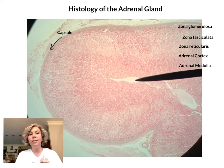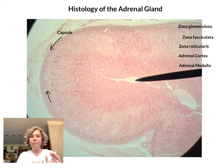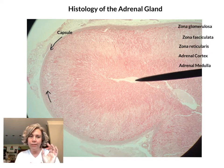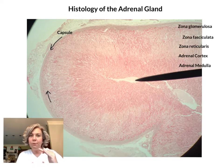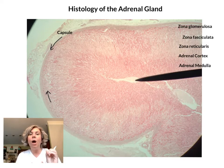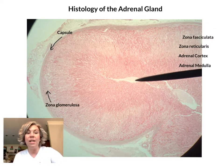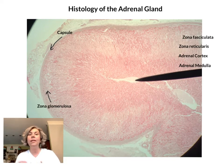The zona glomerulosa resides just underneath the capsule and it's actually quite a thin layer — this lighter region here just underneath the capsule. These layers are very subtle as they change, so you really have to look closely. If you examine the photo you can see differences in the pattern of cells and also in their coloration. The zona glomerulosa is always just underneath the capsule, and it secretes aldosterone.